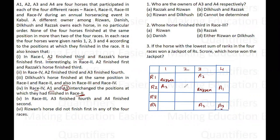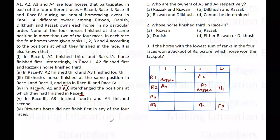Now, whatever position a3 has in race 2, the same position will be of a1 in race 4. The positions left for a3 in race 2 are either second or third. If a3 is third in race 2, then a1 should be third in race 4 — but a2 is already there. So a3 cannot be third in race 2. Therefore, a3 must be second in race 2, and a1 gets the second position in race 4.